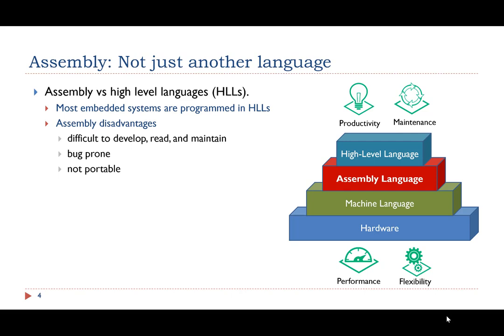The main disadvantages of assembly language are that it is difficult to develop, read, and maintain, and it is bug-prone. In addition, assembly language is not portable from one type of processor to another — an assembly program might need to be completely rewritten for it to run on another processor. High-level languages, on the contrary, are portable and much easier to design and maintain.